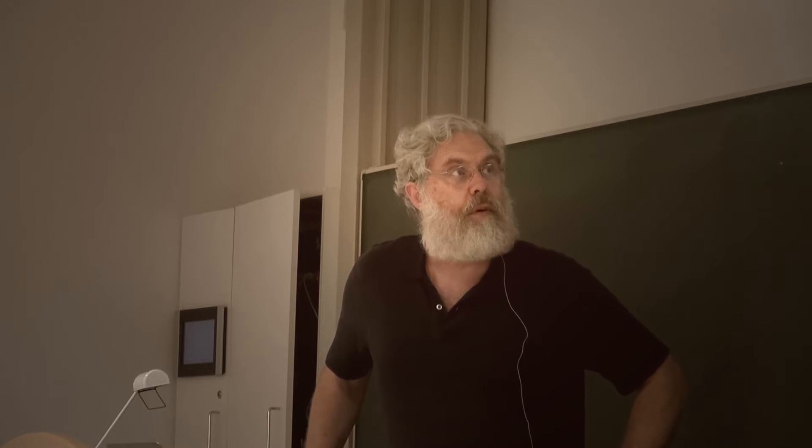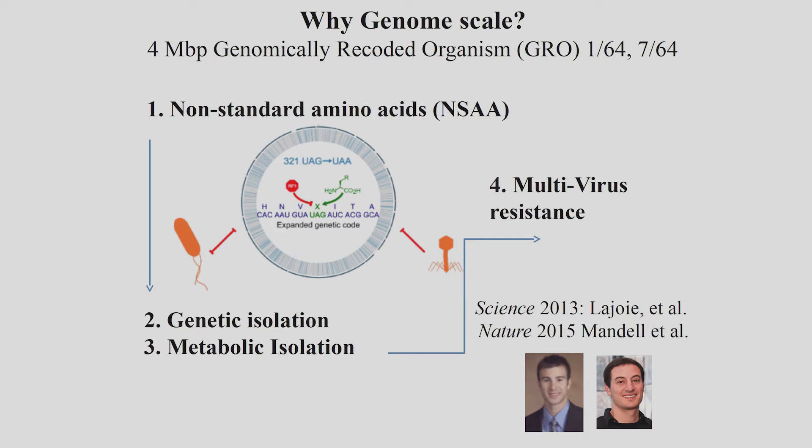First you want to ask why — why change the genome radically? We have four pretty good reasons. First, we greatly improved the ability to use non-standard amino acids, and we've now made them very efficient and can use multiple ones per protein. We also have genetic and metabolic isolation, which we think are useful because of the fourth reason: multivirus resistance. In principle, we can make a version of E. coli — or possibly any organism — that is a priori resistant to all viruses, even viruses you haven't studied yet, because viruses expect a certain genetic code.